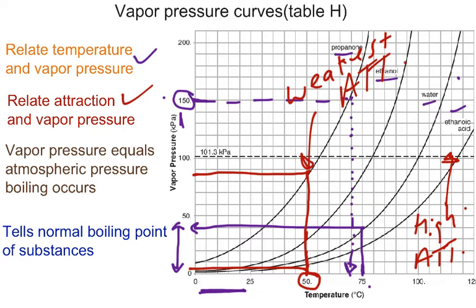Now, how do we know that? Once again, because propanone had the higher vapor pressure at a specific temperature. So, the higher vapor pressure, the weaker your attraction if you compare it to other things.